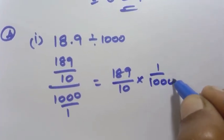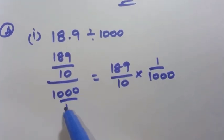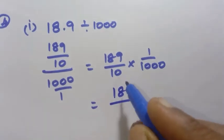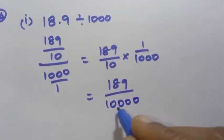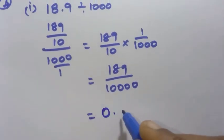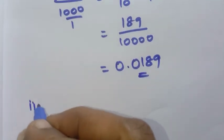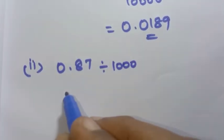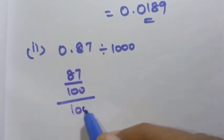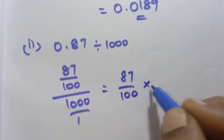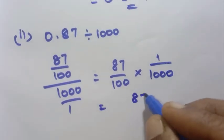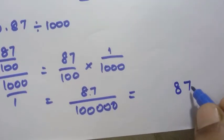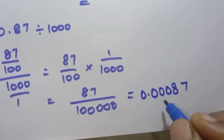0.87 divided by 1000. 0.87 has 2 decimal places, so it is 87 by 100, divided by 1000 by 1. So 87 by 100 into 1 by 1000 gives 87 by 5 zeros (100,000). We have 2 numbers: 8 and 7, with 5 decimal places giving 0.00087 as the answer.